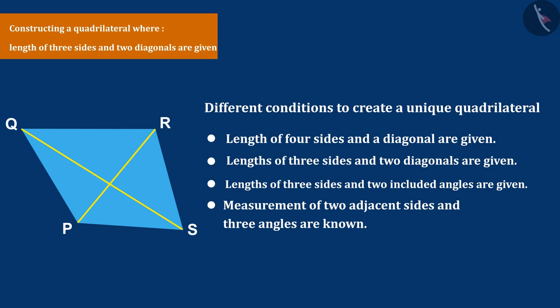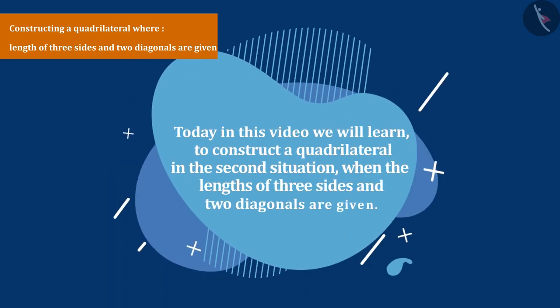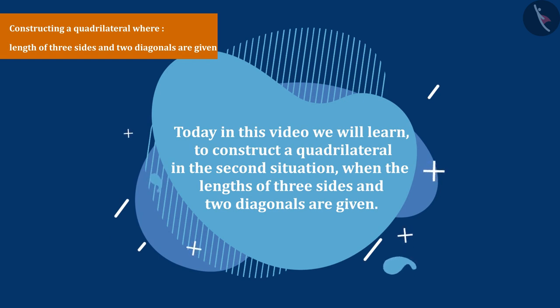We have learned to construct a quadrilateral in the first situation when the length of four sides and a diagonal are given. Today in this video, we will learn to construct a quadrilateral in the second situation when the lengths of three sides and two diagonals are given.